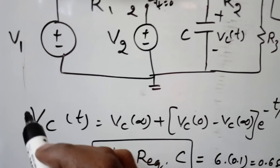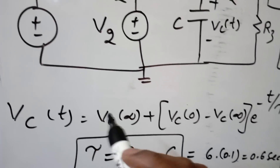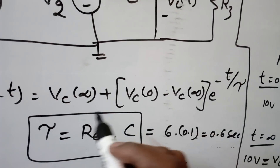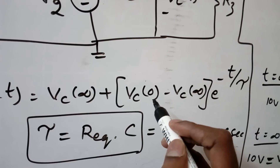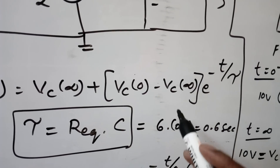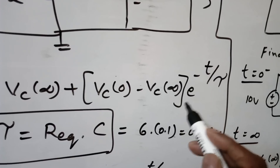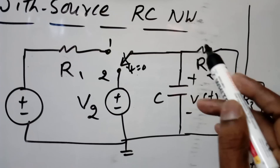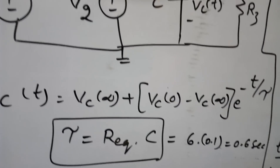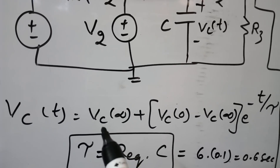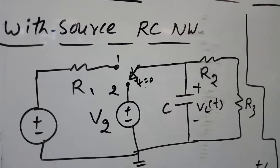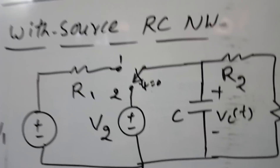So the final equation: when we want to find VC(t) for t greater than 0, we solve like this — VC(t) = VC(∞) + [VC(0⁻) − VC(∞)] × e^(−t/τ). Here τ = R_equivalent × C, because we may have multiple resistances R2, R3, etc. This is similar to what we did for the RL network.